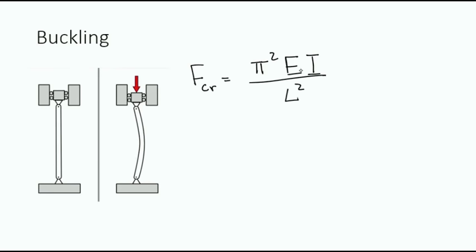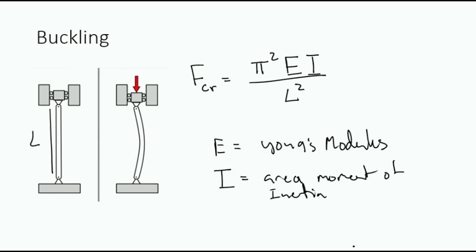This is equal to π² times EI over L², where L is the length of the member, E is the Young's modulus or material stiffness, I is the area moment of inertia, which is a property dependent on the cross-sectional geometry.